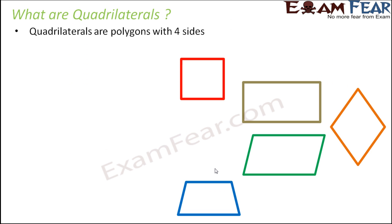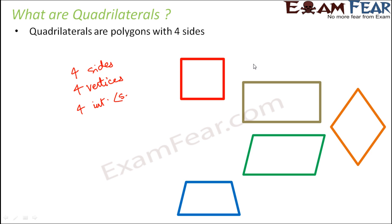So, what are quadrilaterals? These are polygons with four sides. On the screen you can see many varieties in the shapes of polygons, even though all of them have four sides. In any quadrilateral, the things we have in common are: four sides, four vertices, and four internal angles.